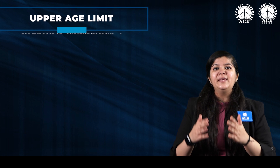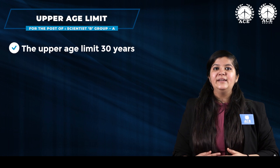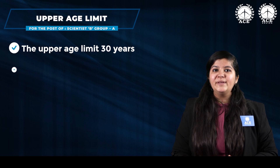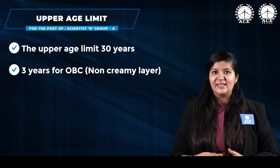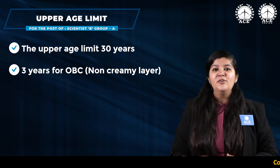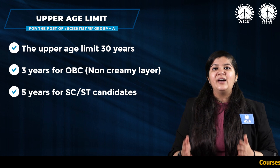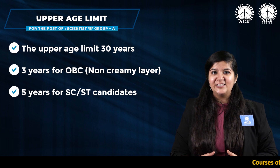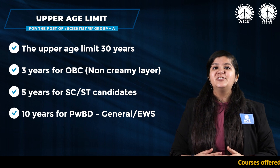Now we will talk about the upper age limit. Your upper age as on the closing day of application should be 30 years. For OBC candidates, 3 years age relaxation is applicable. For SC and ST candidates, 5 years age relaxation is applicable.